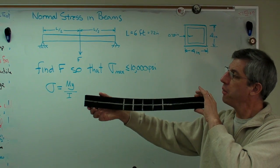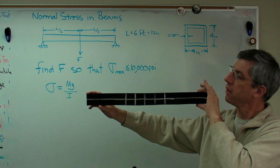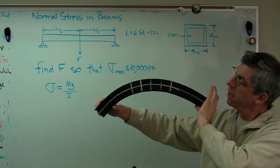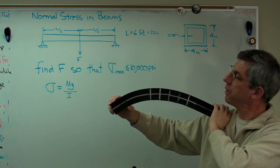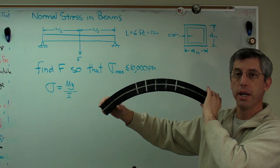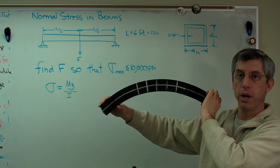Now, if I put this beam in, give it negative curvature, bends like this, you can see these cross-sections right here are farther apart on the top and closer together on the bottom. So the top is in tension and the bottom is in compression.